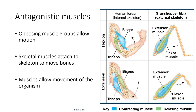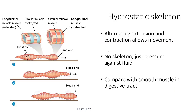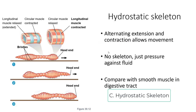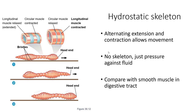The muscles allow movement of the organism, but what if you don't have a skeleton? Then you have what's called a hydrostatic skeleton. The alternating extension and contraction of muscles squeezes against the fluid in the coelom, creating pressure against fluid that moves the organism. You can compare this with how smooth muscle works in your digestive tract.